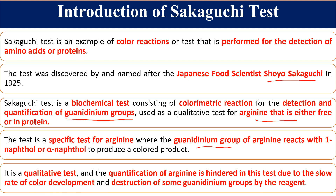We do not use this test for quantitative purposes because quantification is hindered due to a slow color reaction. The red color production does not happen instantly — it is a slow reaction. While complete color formation is occurring, some of the guanidine group gets destroyed. So the exact concentration cannot be evaluated because the red color takes time to form, and meanwhile some guanidine group is degraded, making the observed concentration slightly lower than the actual concentration.